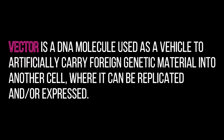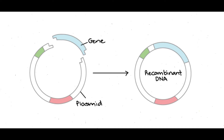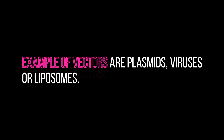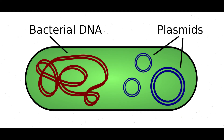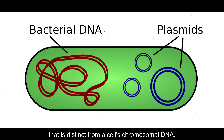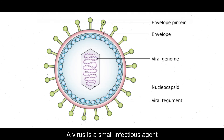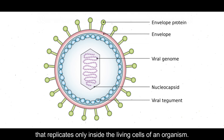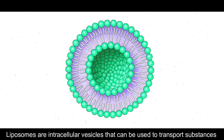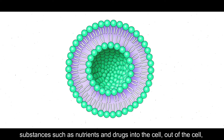The third tool is the vector. A vector is a DNA molecule used as a vehicle to artificially carry foreign genetic material into another cell, where it can be replicated and/or expressed. A vector containing foreign DNA is called recombinant DNA. Examples of vectors are plasmids, viruses, and liposomes. A plasmid is a small circular double-stranded DNA molecule distinct from a cell's chromosomal DNA. A virus is a small infectious agent that replicates only inside the living cells of an organism. Liposomes are intracellular vesicles that can be used to transport substances such as nutrients and drugs into cells.